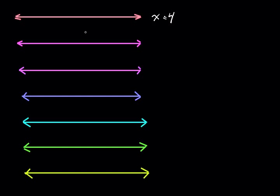Here's a blank number line. You don't have to put 0 in the middle — you can put 0 anywhere you want. It really doesn't matter as long as we are in the neighborhood of what we're interested in. x equals 4 means we're going to put a solid dot at 4. It simply means the point x equals 4.